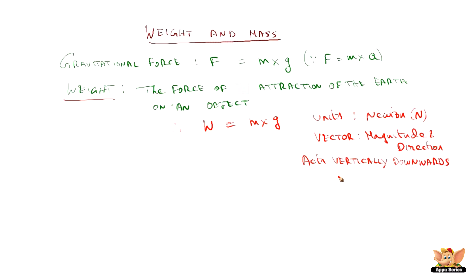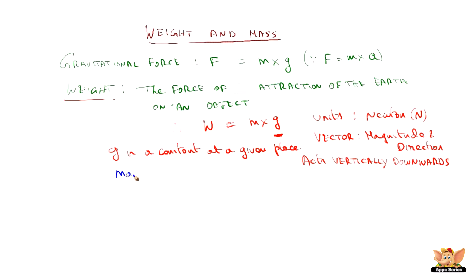g is a constant at a given place. Why at a given place? Because g varies from planet to planet, and g also varies from place to place on the Earth. In contrast, the mass of an object is constant everywhere — whether you take the mass of an object on the Earth, anywhere on the Earth, or on the Moon, the mass of the object does not change.